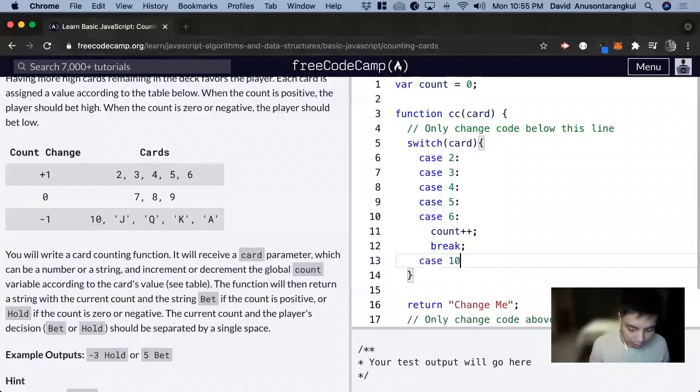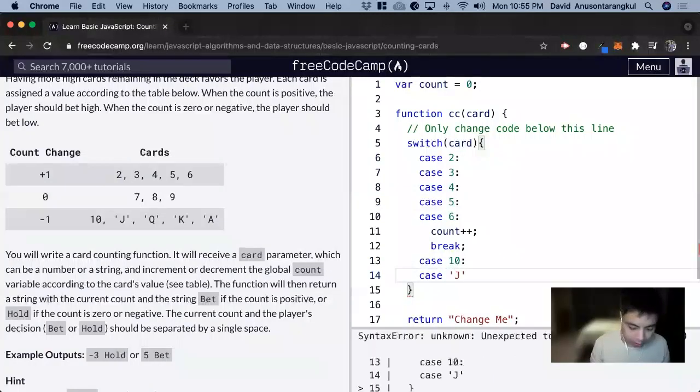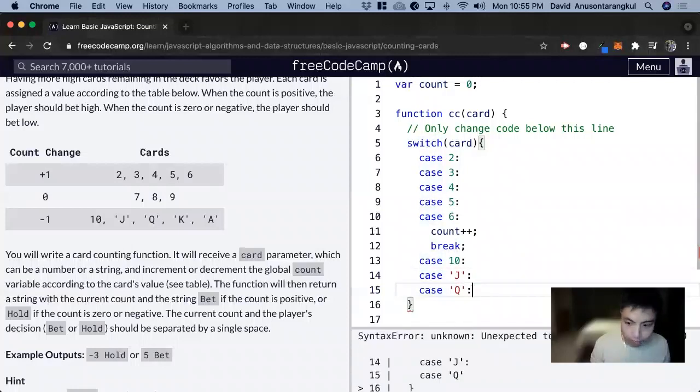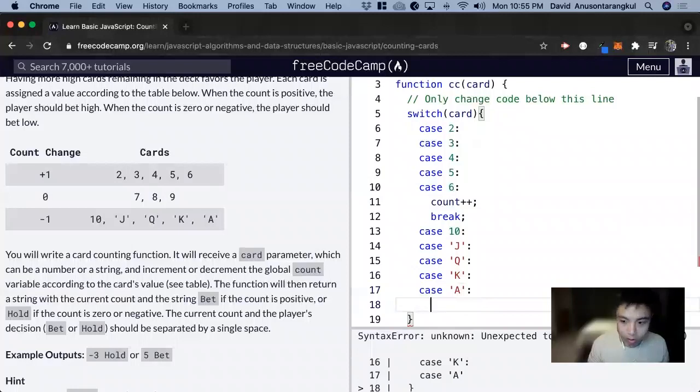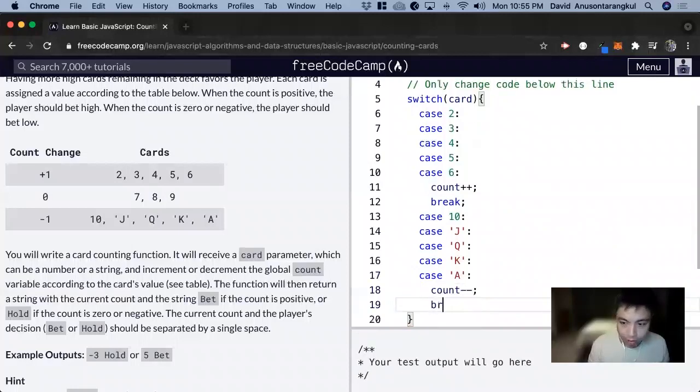So case 10, case the string of J, case the string of Q, case the string of K, case the string of A. We want to decrement the count and then break.